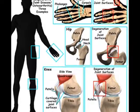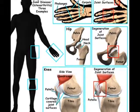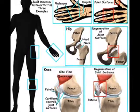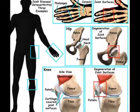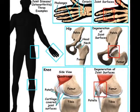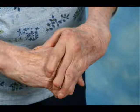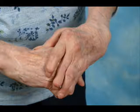Rheumatoid arthritis affects the temporomandibular joint in only about 17% of people with this type of arthritis. When rheumatoid arthritis is severe, especially in young people, the top of the jawbone may degenerate and shorten. This damage can lead to sudden misalignment of many or all of the upper and lower teeth.